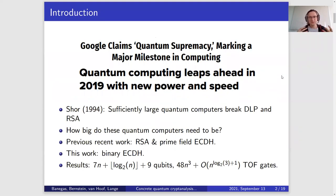What does it actually mean — concrete quantum cryptanalysis? As you might be aware, in 1994 Shor published Shor's algorithm, which allows a sufficiently large quantum computer to break RSA and the discrete logarithm problem. Our question for today is: how big is sufficiently large? Previous work looked at RSA as well as prime field elliptic curve Diffie-Hellman. Today we will be talking about binary elliptic curve Diffie-Hellman. When we say concrete, we really mean the number of qubits and the number of gates.